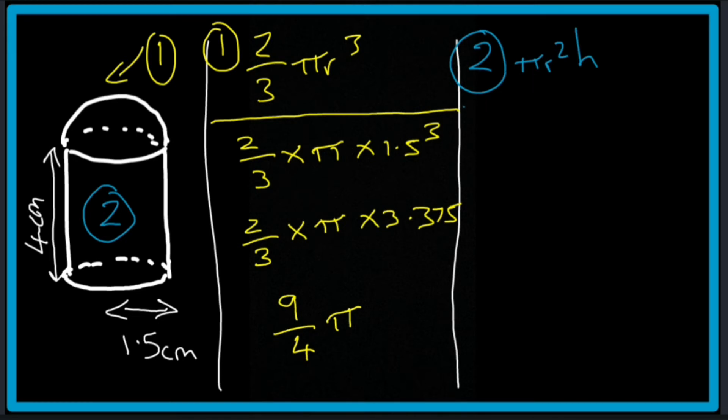So again if I substitute the values in it's going to be pi times by 1.5 squared times by 4. So when you plug this into the calculator it comes out with 9 pi.